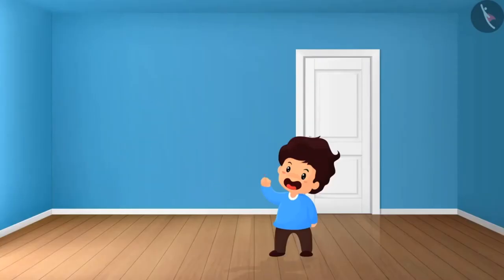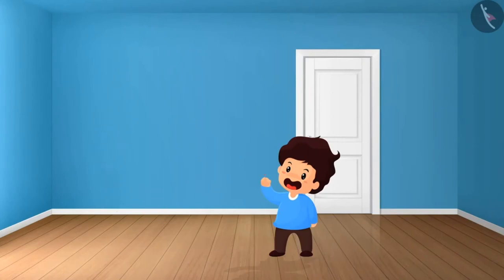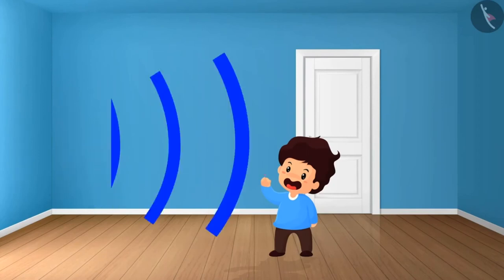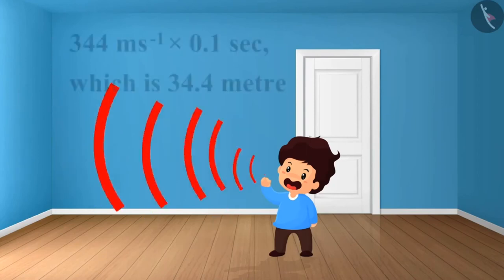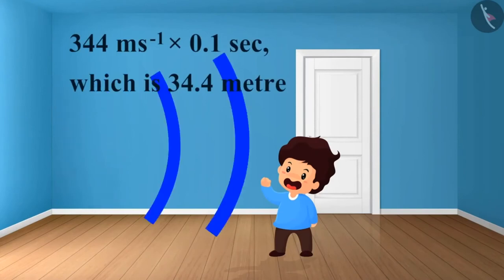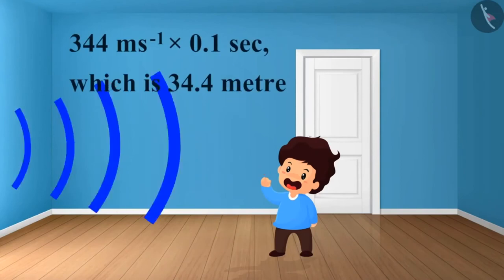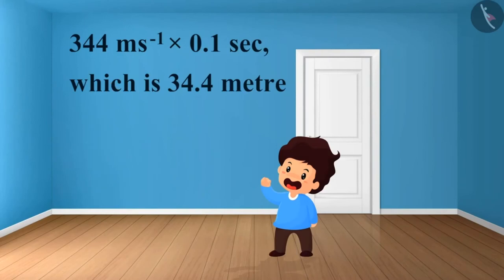Now suppose the speed of sound in air at 22 degrees Celsius is 344 meters per second. The sound must hit the obstacle and reach the ear of the listener after 0.1 seconds. So the distance travelled by the sound from its source to the reflecting surface and back to the listener should be at least 344 meters per second multiplied by 0.1 seconds, which is 34.4 meters.